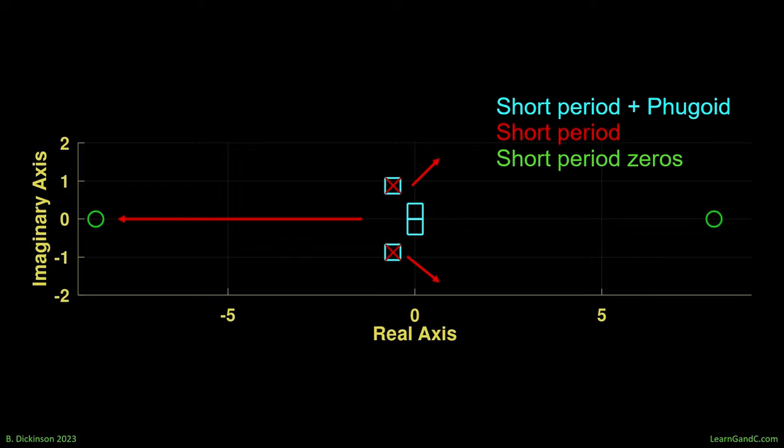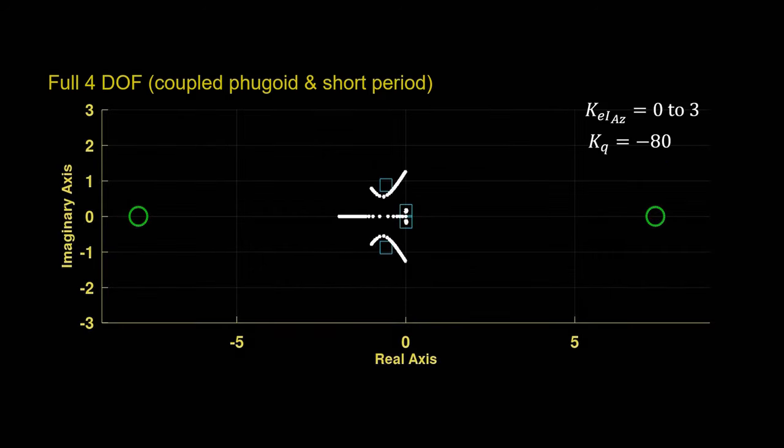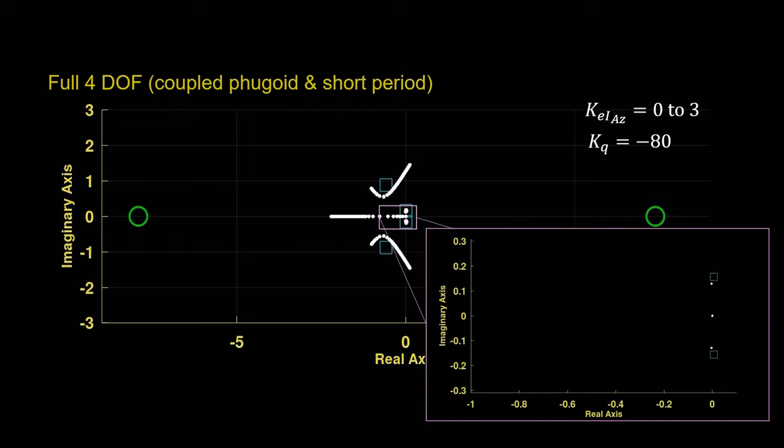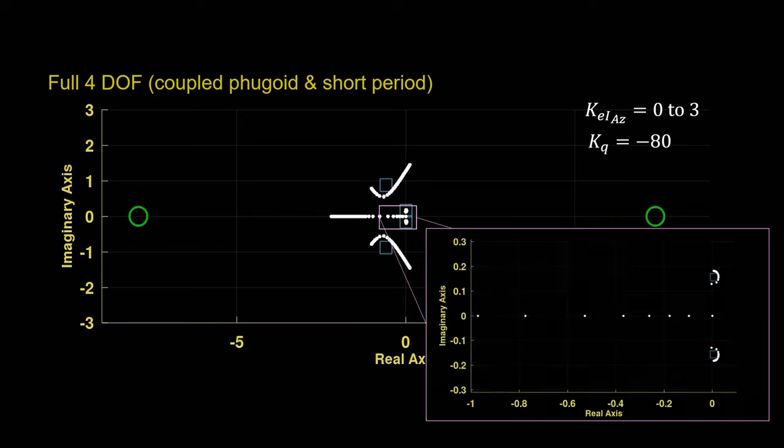Let's check the root locus for the modally coupled 4x4 rigid body dynamics. We choose minus 80 for KQ, as it provided decent damping previously. And as we can see, the short period and the integrator follow a similar pattern as before, while the fugoid remains around the origin. The fugoid eigenvalues circle in to the right-half plane before being directed back to the left-half. For all these gains from zero to three, for integral error, the fugoid remains near the imaginary axis. So, if it is unstable, it's a slow instability.